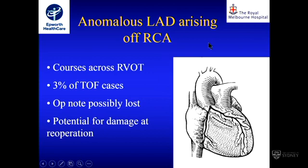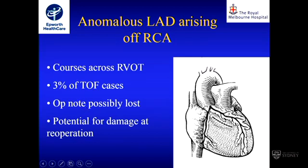Anomalous LAD arising off the right coronary occurs in about 3% of Tetralogy patients, and that can be a problem because the previous operation note from 30 or 40 years ago may have been lost. You may have to extend your incision into the outflow tract for the pulmonary valve replacement, with potential for damage there.